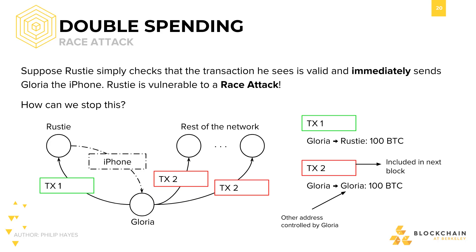I just successfully double spent on Rusty through a race attack. It's called a race attack because the timing of transactions affects the outcome. The transaction to Rusty doesn't go through because it's beaten by the second transaction that spends the same UTXO. The second transaction making its way into the blockchain prevents poor Rusty from ever getting the bitcoins.